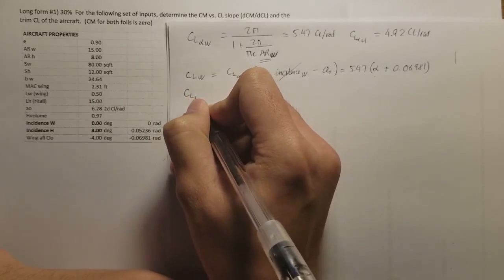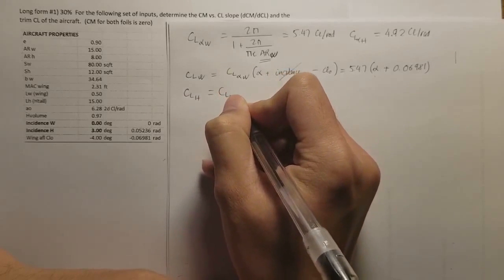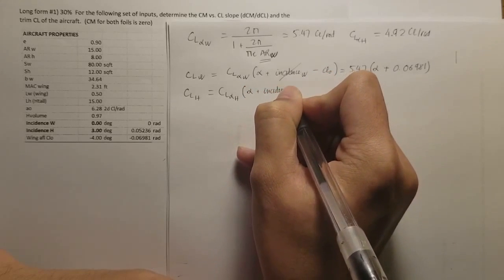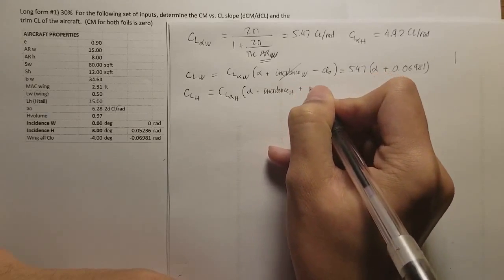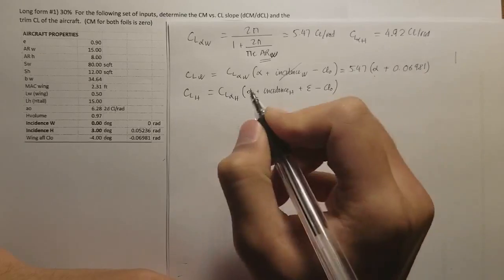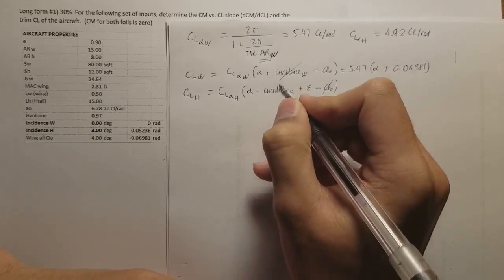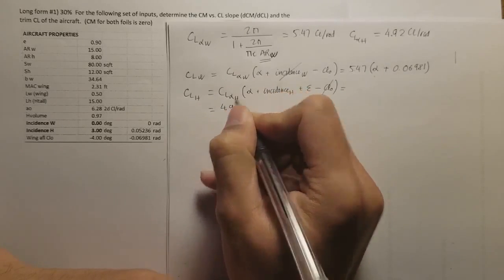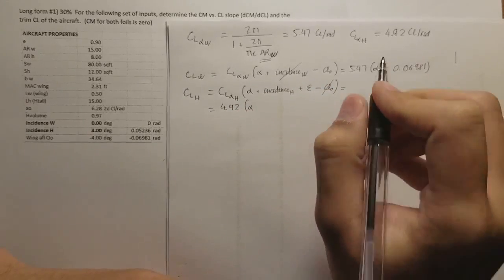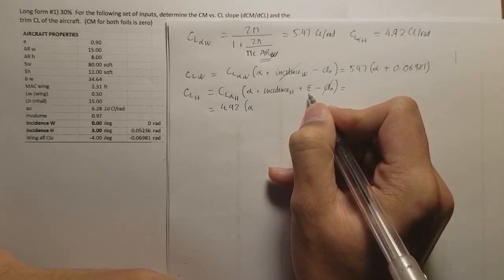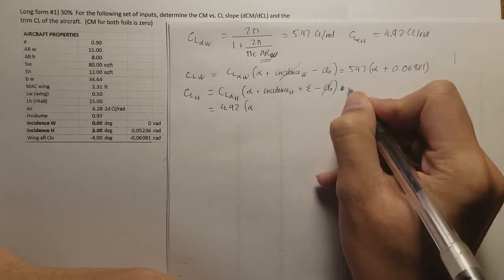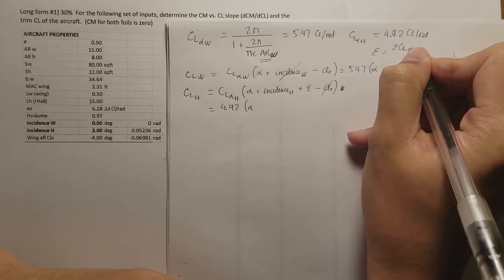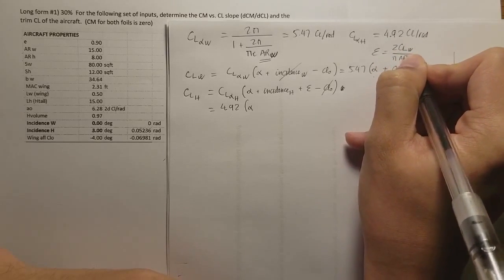You're going to do the same thing for the lift coefficient of the tail — a pretty similar formula, except you include the downwash angle: CL alpha tail times (alpha minus downwash angle plus incidence of tail) minus CL0 of the tail. For the tail, CL0 is zero. The downwash angle is given by the formula: 2 times CL of the wing divided by pi times the aspect ratio of the wing.